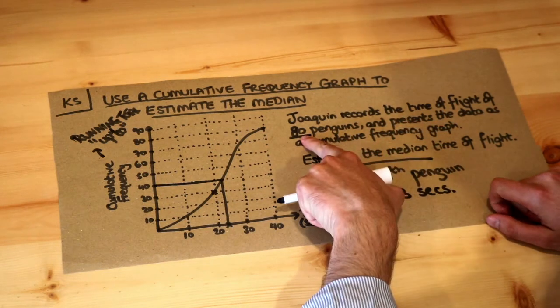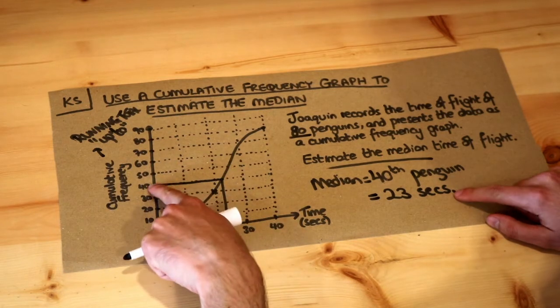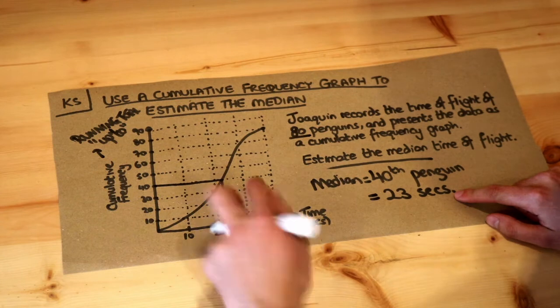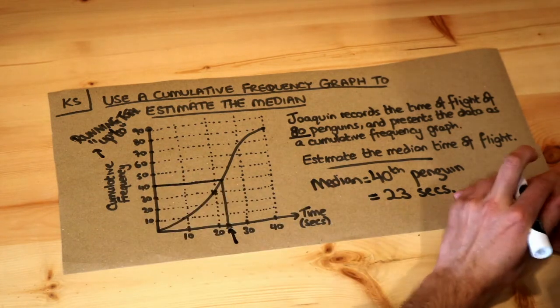So you just halve the total frequency—we halve the 80 penguins to get 40. We go across 40 on the cumulative frequency, come down, and that value there will be the median.